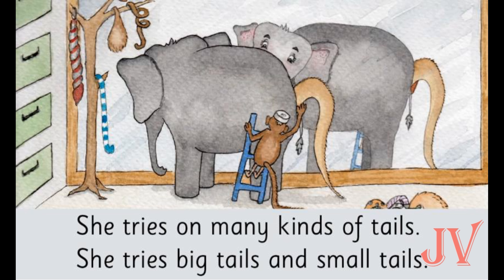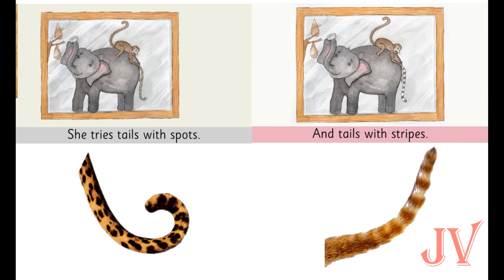We can see Banjo is trying on different kinds of tails. She tries big tails and then she tries small tails. Here Banjo tries tails with spots and stripes. Spots are circles and stripes are lines.